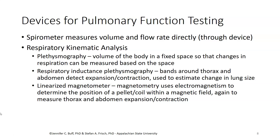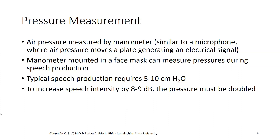A magnetometer uses electromagnetism to determine the positions of coils within a magnetic field. This is a way, without wrapping bands around the body, to measure thoracic and abdominal expansion or contraction as part of respiration. Air pressure is measured by a manometer, a device similar to a microphone where air pressure moves a plate and generates an electric signal. If we have a manometer mounted in a face mask, it can measure pressures during speech production. This is how we know that typical speech production requires something between 5 and 10 centimeters of H2O pressure above atmospheric pressure, and that increasing intensity by 8 or 9 dB requires a doubling of that pressure.